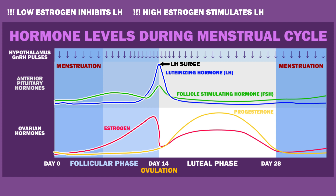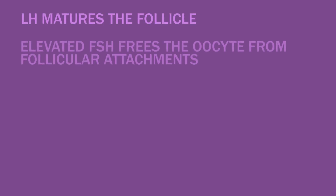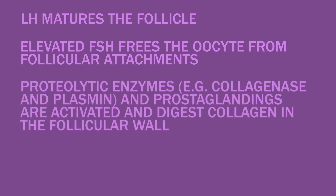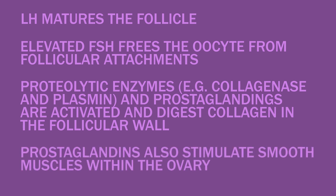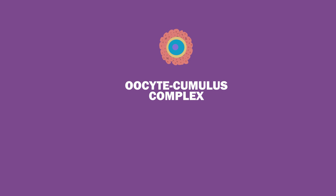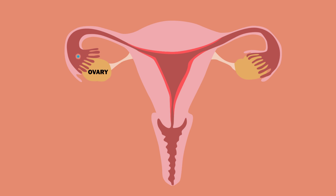The peak of the LH surge takes place right before ovulation. LH matures the follicle, and elevated FSH levels are thought to free the oocyte from follicular attachments. Proteolytic enzymes such as collagenase and plasmin, as well as prostaglandins, are activated and digest collagen in the follicular wall. Prostaglandins also stimulate smooth muscles within the ovary, further promoting release of the oocyte. This leads to the explosive release of the oocyte-cumulus complex. Cumulus cells are specialized granulosa cells that surround an oocyte and ensure healthy oocyte and embryo development. Once the egg is released, rupturing through the ovary wall, it is swept into the fallopian tube by the fimbria, a fringe of tissue along its edge. After a day, an unfertilized egg will disintegrate in the fallopian tube.